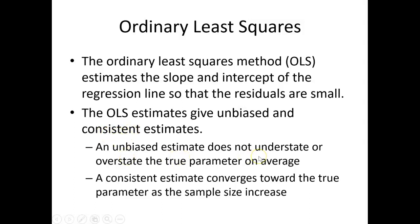An unbiased estimate does not understate or overstate the true parameter on average — this gives us a good estimate of that central tendency of the parameter. A consistent estimate converges towards the true parameter as the sample size increases. An inconsistent estimate would probably be associated with a smaller sample size, so the larger the sample size, the greater we think our accuracy of our estimates are going to be.